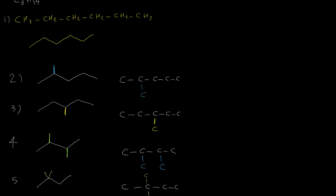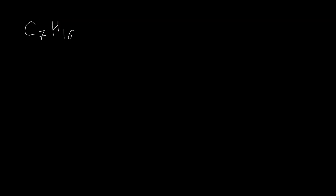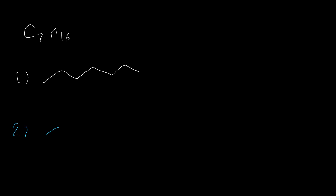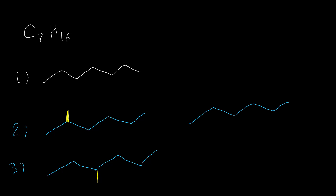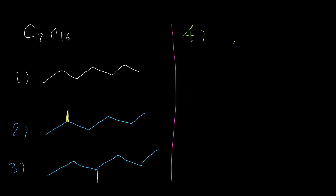Let's look at the nine isomers of heptane using the same method. The first isomer is the normal alkane with seven carbons in one chain. Next we draw six carbons in the chain and put the seventh as a substituent. A six-carbon chain has two different positions for the branch: on the second carbon and on the third carbon. The six-carbon chain is symmetric, so the second from the left equals the second from the right, and third from left equals third from right — any other placement would be repetitive.